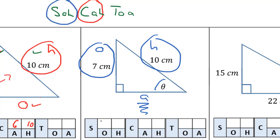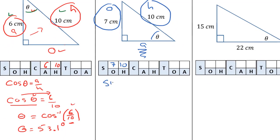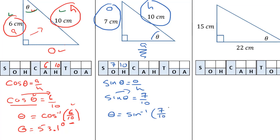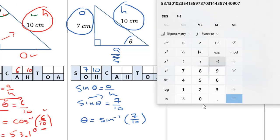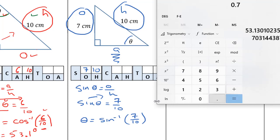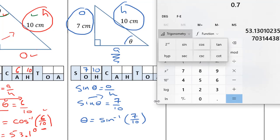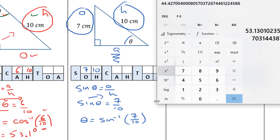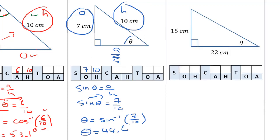We're going to put 7 in for the opposite and 10 in for the hypotenuse. So we have sine of theta equals opposite over hypotenuse, which gives us sine of theta equals 7 over 10. Moving sine to the other side, we get theta equals sine inverse of 7 over 10. On the calculator, I'll type in 7 divided by 10, hit equals to get 0.7, then go to the trig drop-down, second function, and click sine inverse. Angle theta has to be 44.4 degrees.